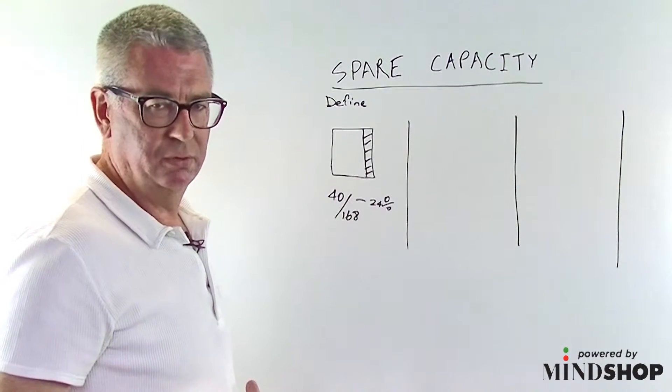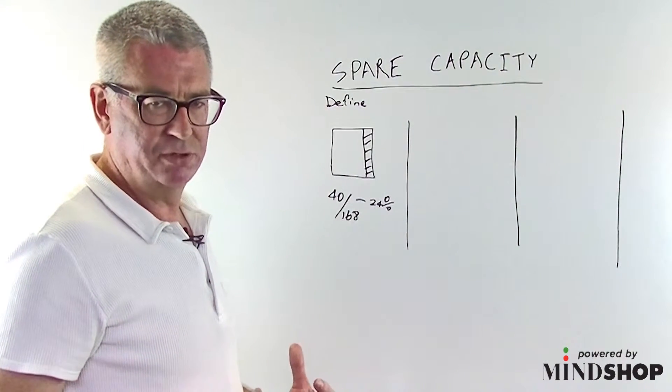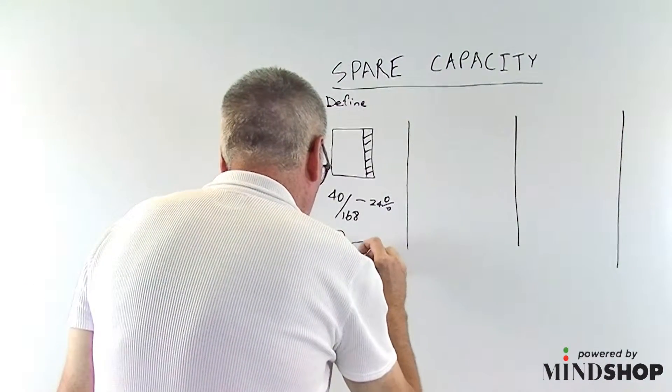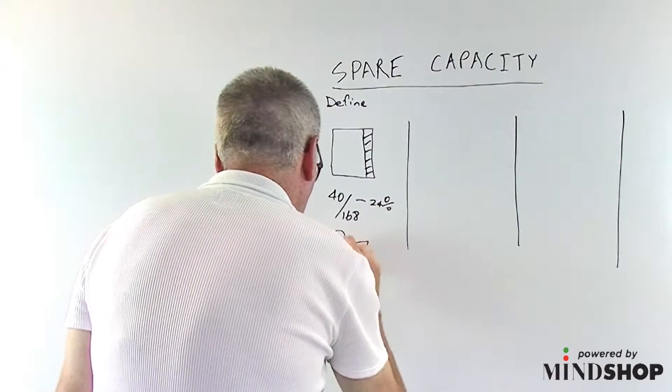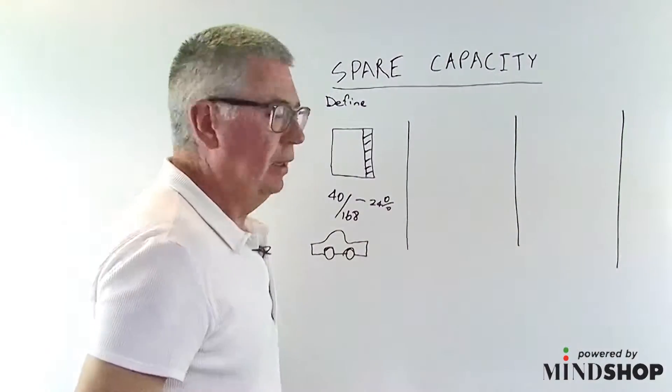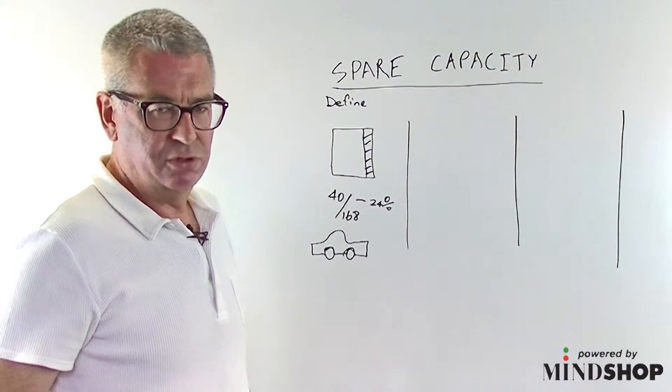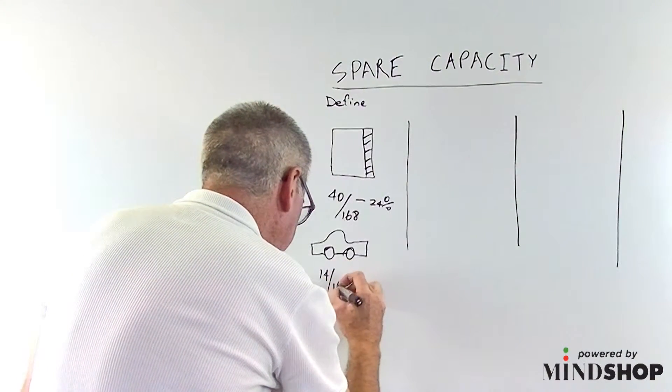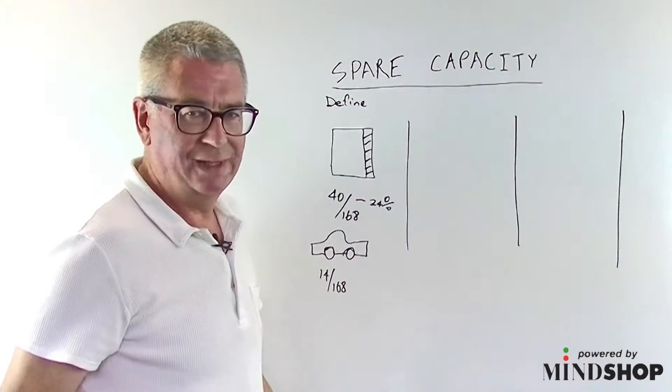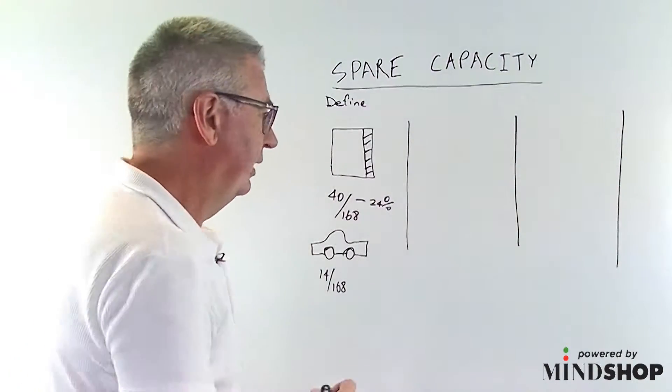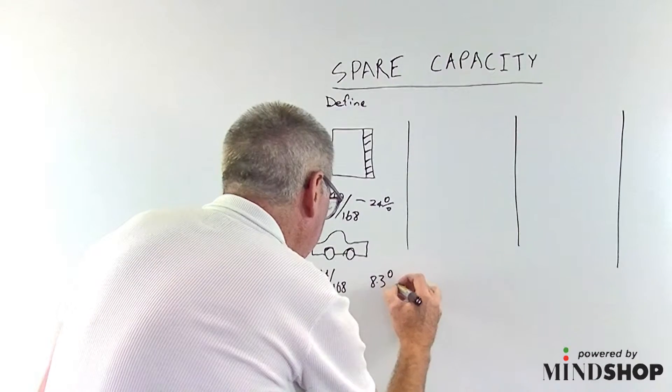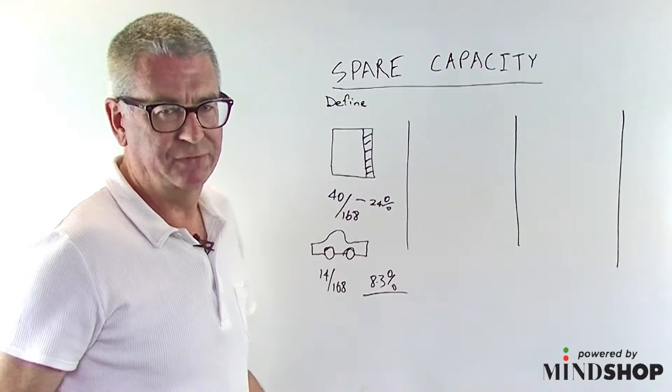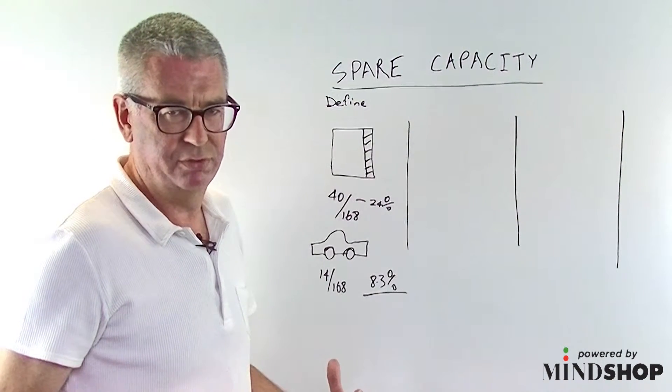But if we think about something else, say the car which is the second most expensive purchase of most families, it's even worse. So the average car in the Western world is used less than two hours a day. That's 14 hours out of 168. So that's about 8.3%. Now that's pretty awful use of capex for something as the second most expensive purchase that most families make.